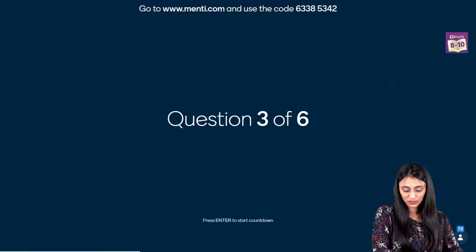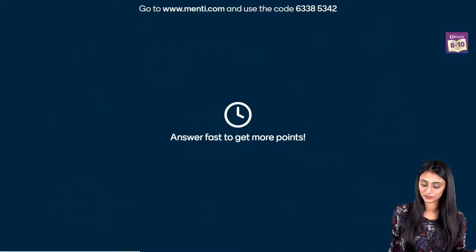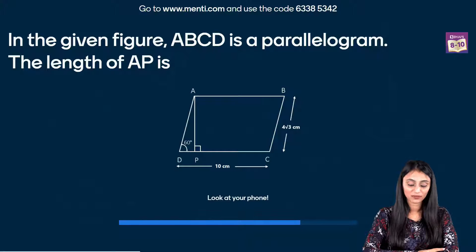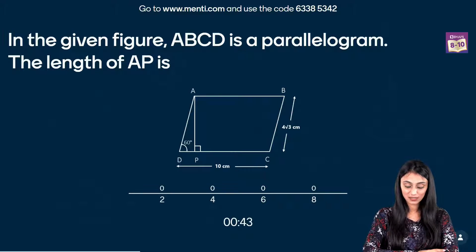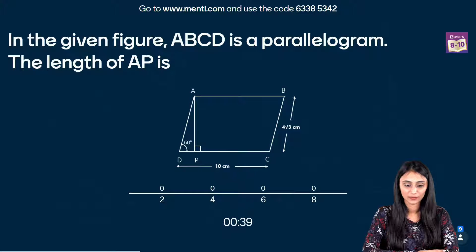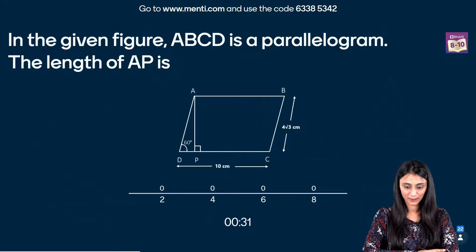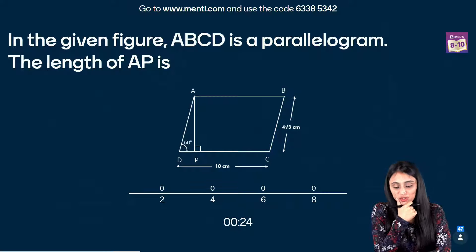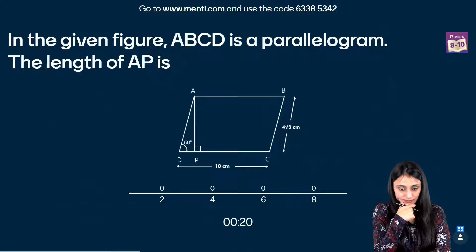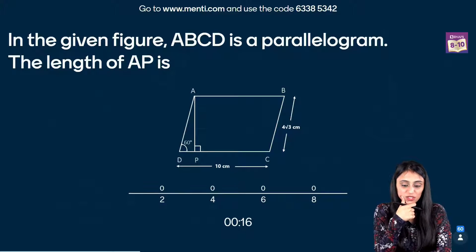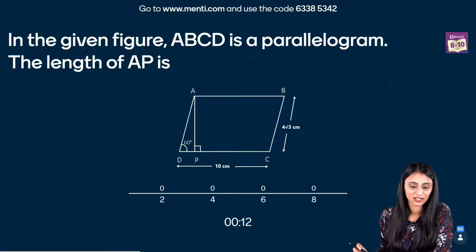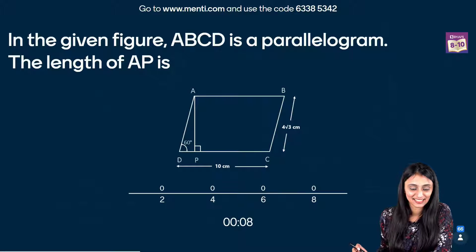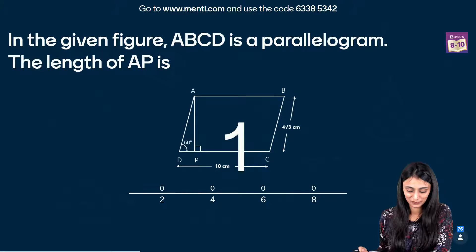Let's take a look at the next question which is question number 3. So in the given figure ABCD is a parallelogram. The length of AP is? You can see DC is given, BC is given, angle is given here. Use 2 seconds. Wow. Amazing. Yes, we have done applications of trigonometry session in Byju's classes also Yogi. We have done that. Yes, Mityasha, mental calculation. This is a simple question. Sukjot also finds it's easy. Yes, Shitej is here. Time is up. Alright.